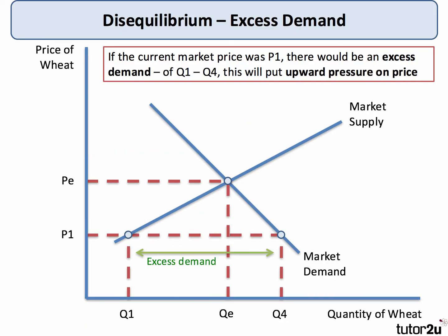Conversely, if the market price is P1, below the equilibrium PE, low prices mean demand is higher — people want to buy products at cheap prices expecting a bargain. But producers are not willing to bring as much to the market.